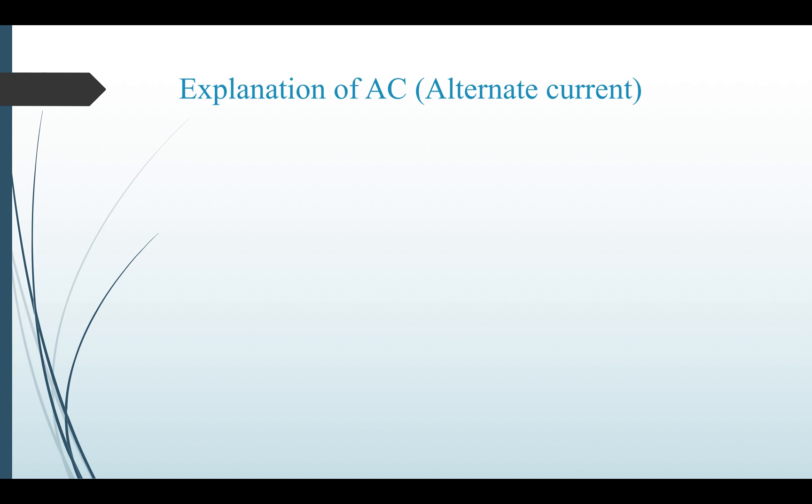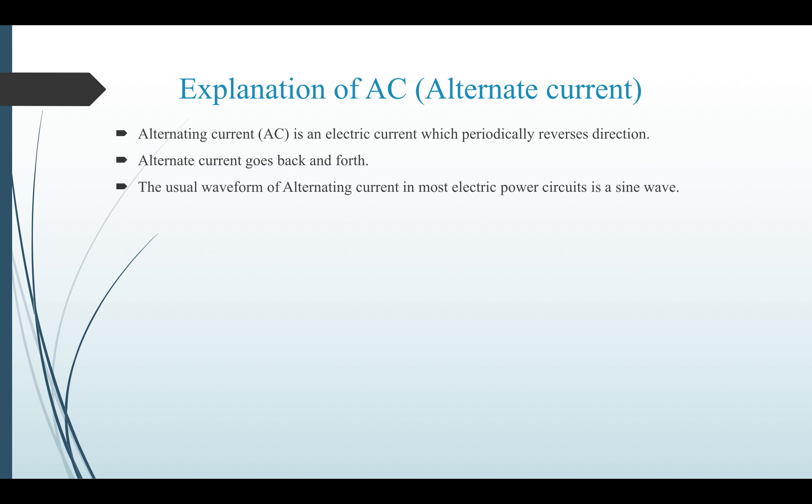So next, explanation of AC, alternating current. Alternating current is an electric current which periodically reverses direction. It is said that alternate current goes back and forth. The usual waveform of alternating current in most electric power circuits is a sine wave.